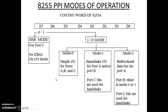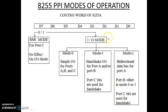Hello students. In this slide, we will be discussing about 8255 PPI modes of operation. Basically, PPI — Programmable Peripheral Interface or Programmable Parallel Input-Output device — it can operate basically in two modes. One is BSR mode, the other one is IO Mode.